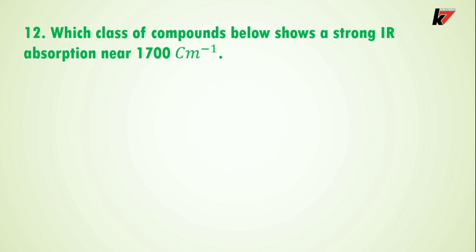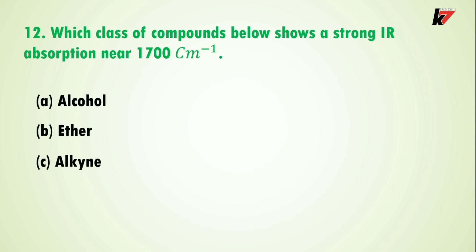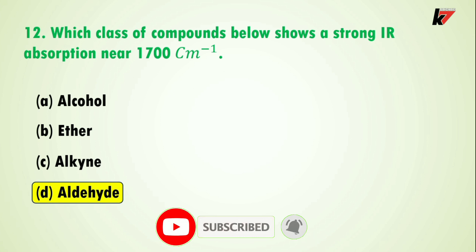Question 12: which class of compounds shows a strong IR absorption near 1700 cm⁻¹? Option A is alcohol, option B is ether, option C is alkyne, option D is aldehyde. The correct answer is option D: aldehyde. In aldehyde, the carbonyl group is present and it will absorb the IR spectrum at 1700 cm⁻¹.